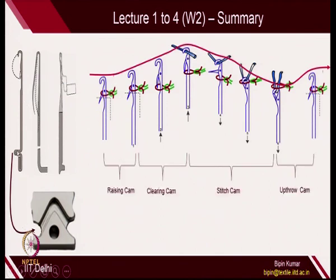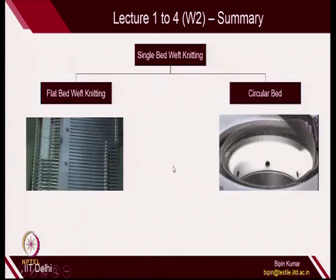During the interaction of the butt with the cam, the cam has to be specifically designed to create a track. To create this track, the cam is arranged using a raising cam, clearing cam, stitching cam, and upthrow cam, so that each of these cams interacts with the butt at a specific time to perform the knitting function. We have already discussed this in week 2.